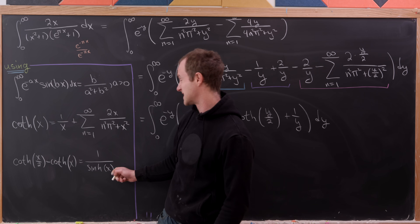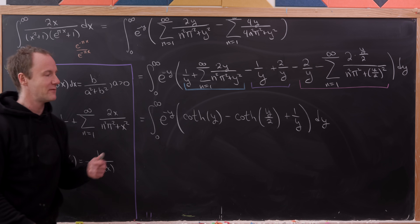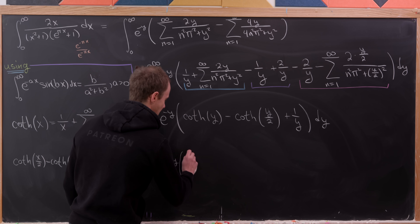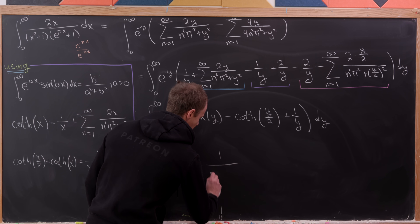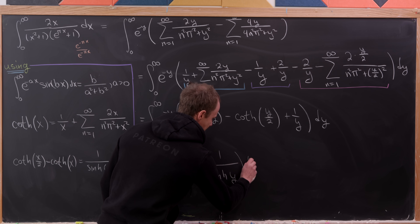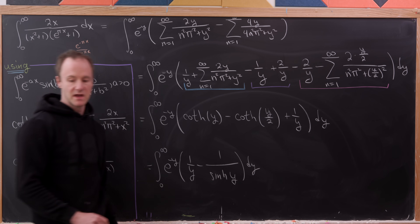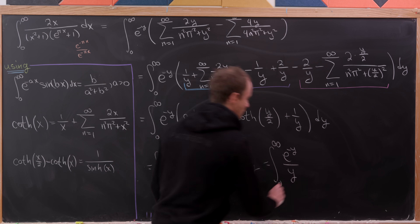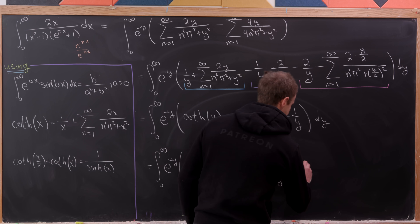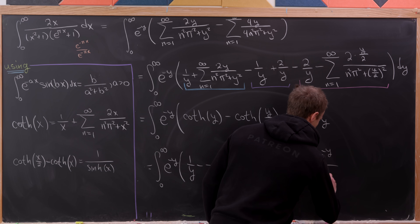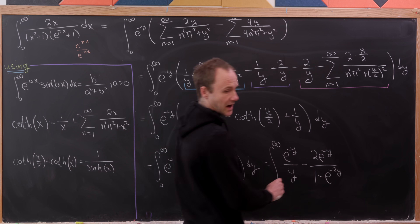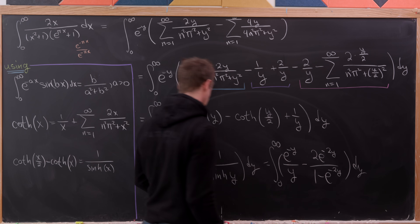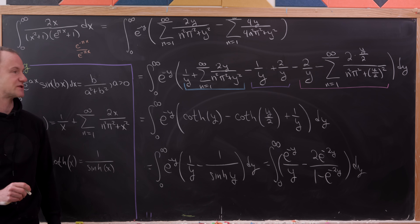Applying our third identity, coth(y/2) − coth(y) = 1/sinh(y), the expression becomes the integral from 0 to infinity of e^{−y}·(1/y − 1/sinh(y)) dy. Expanding using the definition of sinh, this equals the integral from 0 to infinity of e^{−y}/y minus 2e^{−y}/(1 − e^{−2y}) dy.